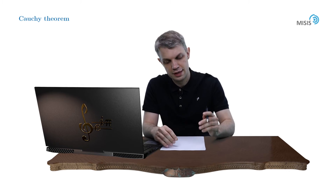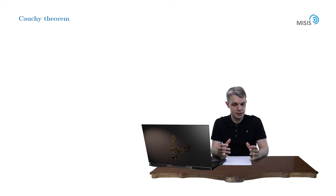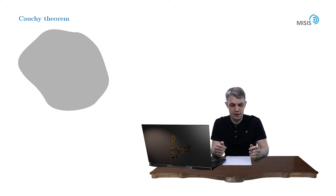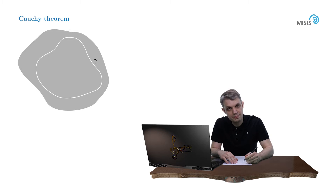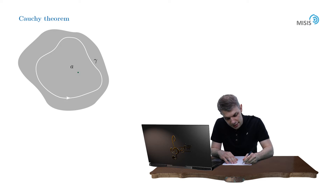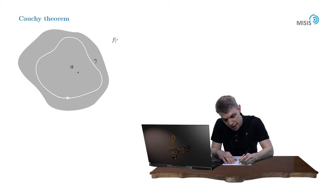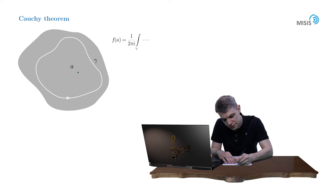The statement goes as follows. Suppose we have some simply connected region and a function f holomorphic inside this region, and then we have some closed contour gamma passed in the counterclockwise direction. Let's pick up some point A inside this contour. Then for any such point A, f of A is equal to 1 over 2πi times the integral over the closed contour gamma of f(z) over (z minus A) dz.